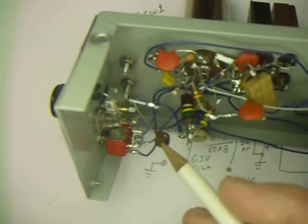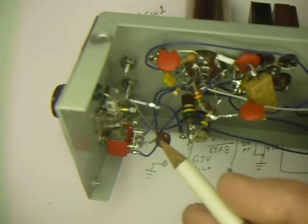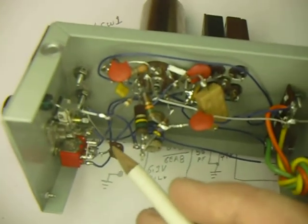And this is the 100 picofarad capacitor that goes across to ground on the coil on the other side of the switch that lowers the frequency for 80 meters.